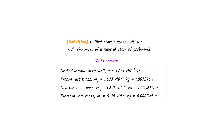The unified atomic mass unit is defined as one twelfth of the mass of a neutral atom of carbon-12. Note that the data booklet also gives the unified atomic mass unit in terms of kilograms.